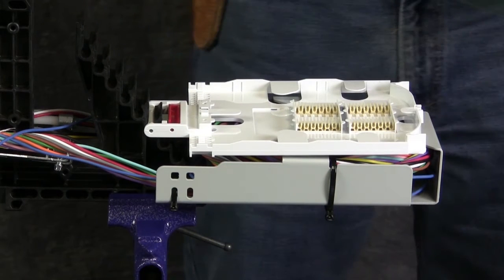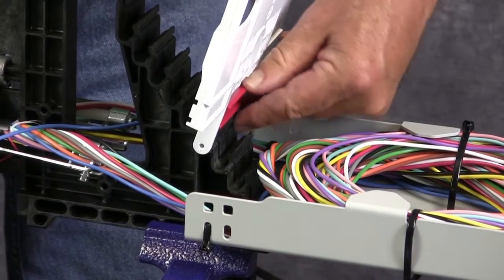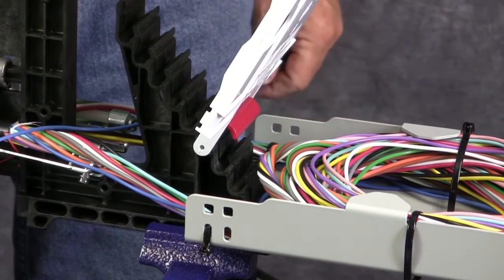You'll note that for the Fosk C and D size closures, the splice trays lay into position, and the tray can be locked in the up position by using the red kickstand feature.